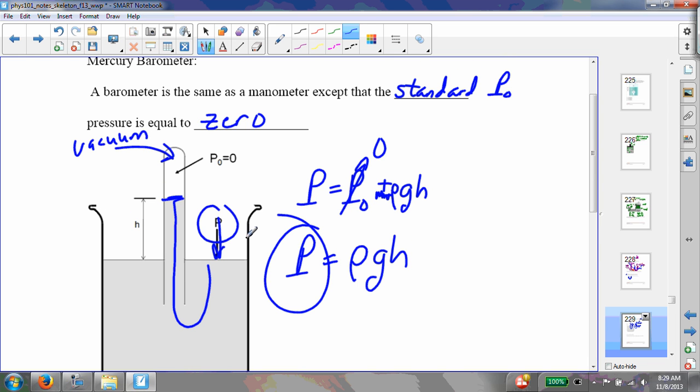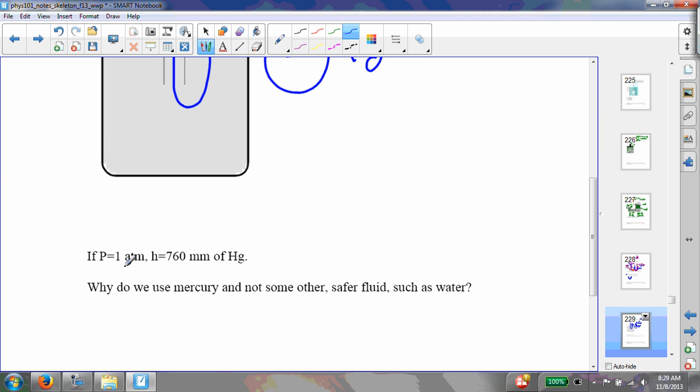Now atmospheric pressure, at one atmosphere, the height of that column is going to be 760 millimeters. That's if you're using mercury, which is the common thing to use in barometers.